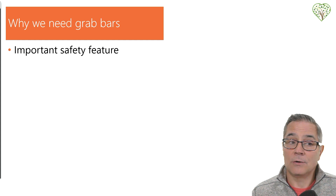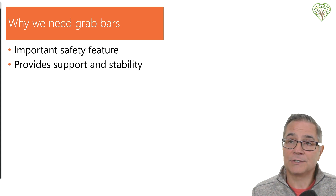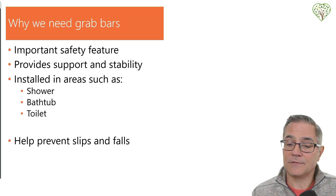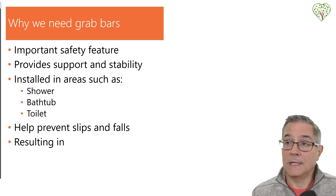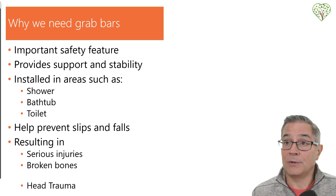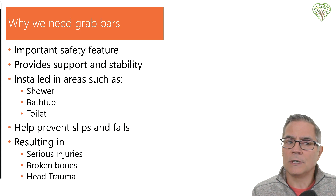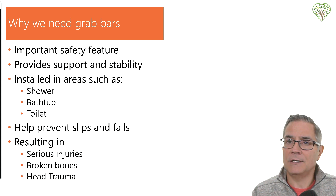So why do we need grab bars? A grab bar is a very important safety feature that provides support and stability in hazardous areas like showers, bathrooms, and toilets, where surfaces are typically tile, slippery, moist, and wet. We need them for stability to help prevent falls and slips, which typically result in serious injuries like broken bones, broken hips, and head trauma. Grab bars are designed to withstand certain amounts of force and can be installed in a variety of configurations and lengths to suit any user's needs. I recommend working with an occupational therapist or your medical team to determine the best mounting location.